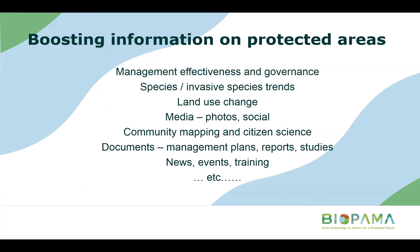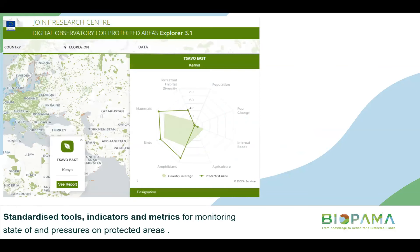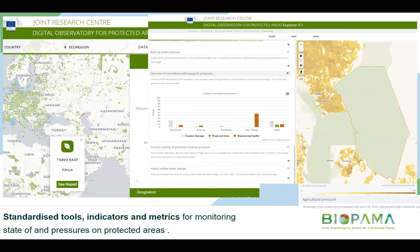We were very happy that RCMRD agreed to host the observatory and resource hub, because they already collect and generate a really wide range of biophysical data. That helps us set the scene for strategic planning of protected areas, since the connectivity and viability of protected areas depends on human activities and needs in the wider landscape. We can build on this strong spatial data infrastructure by collating and bringing in different information at other scales relating to protected areas, from local experts, volunteer citizen scientists, researchers, and authoritative national reporting.